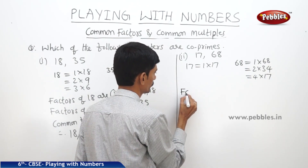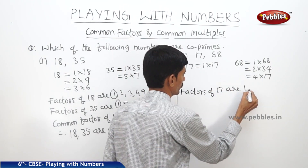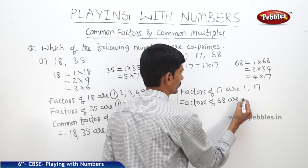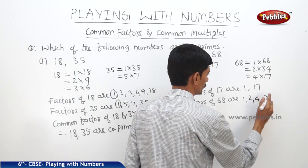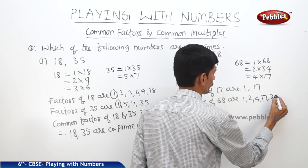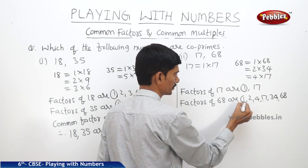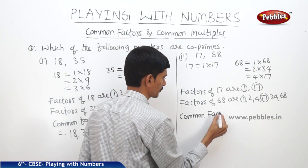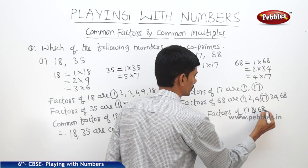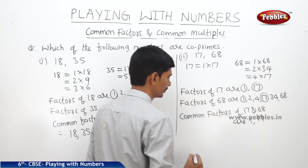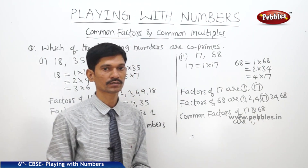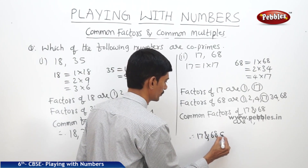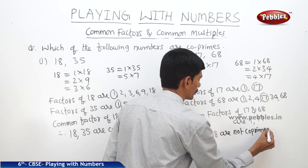The factors of 17 are 1 and 17. The factors of 68 are 1, 2, 4, 17, 34 and 68. Observing the common factors: 1 is the common factor and 17 is also the common factor. So the common factors of 17 and 68 are 1 and 17. Since the common factor is not only 1, we can say that 17 and 68 are not co-prime numbers.